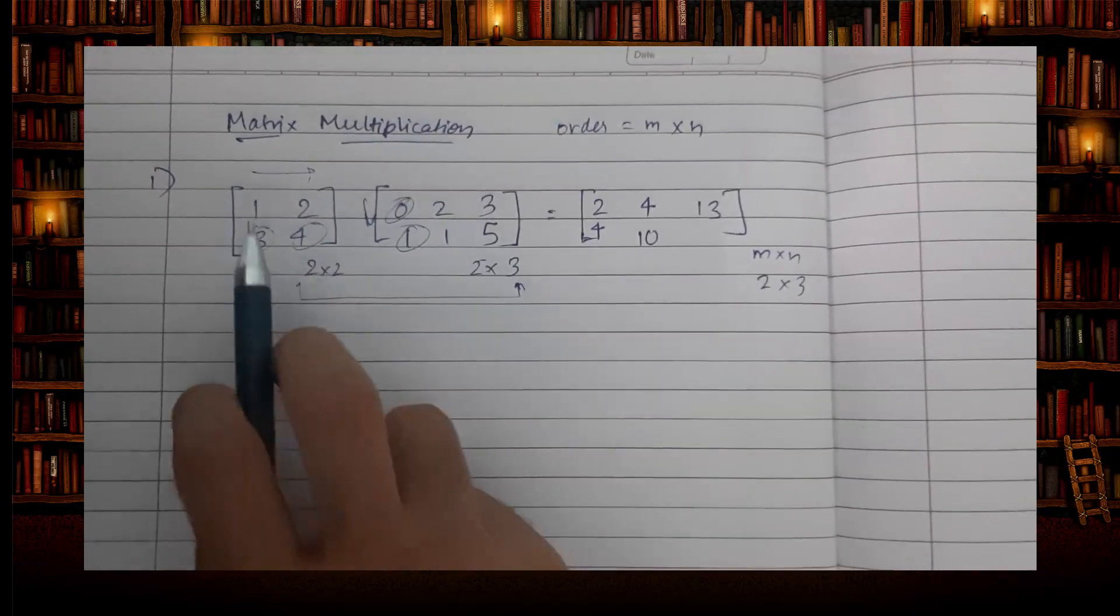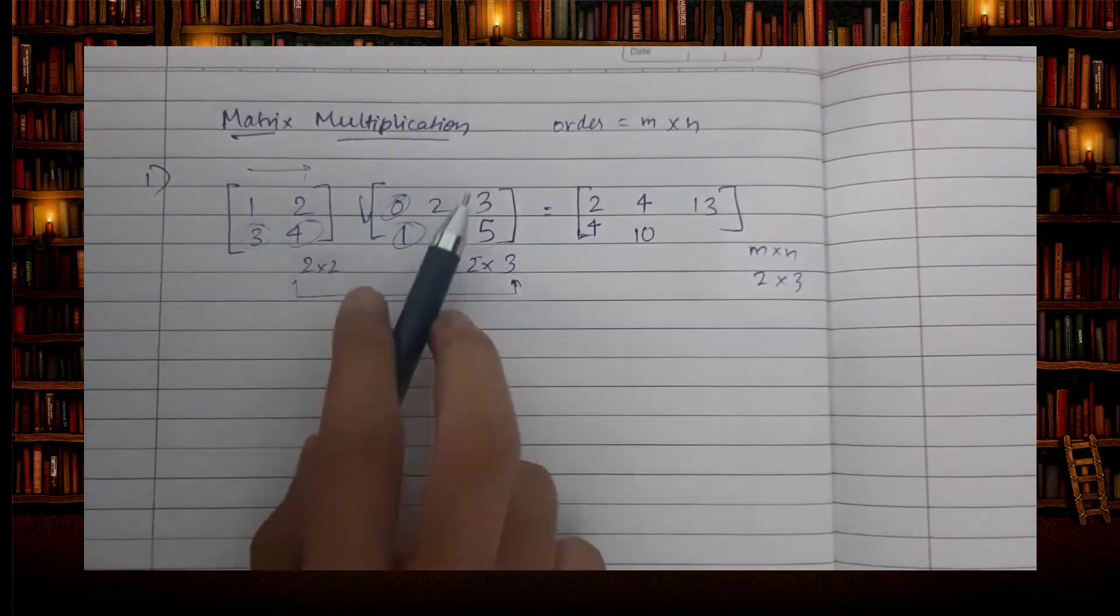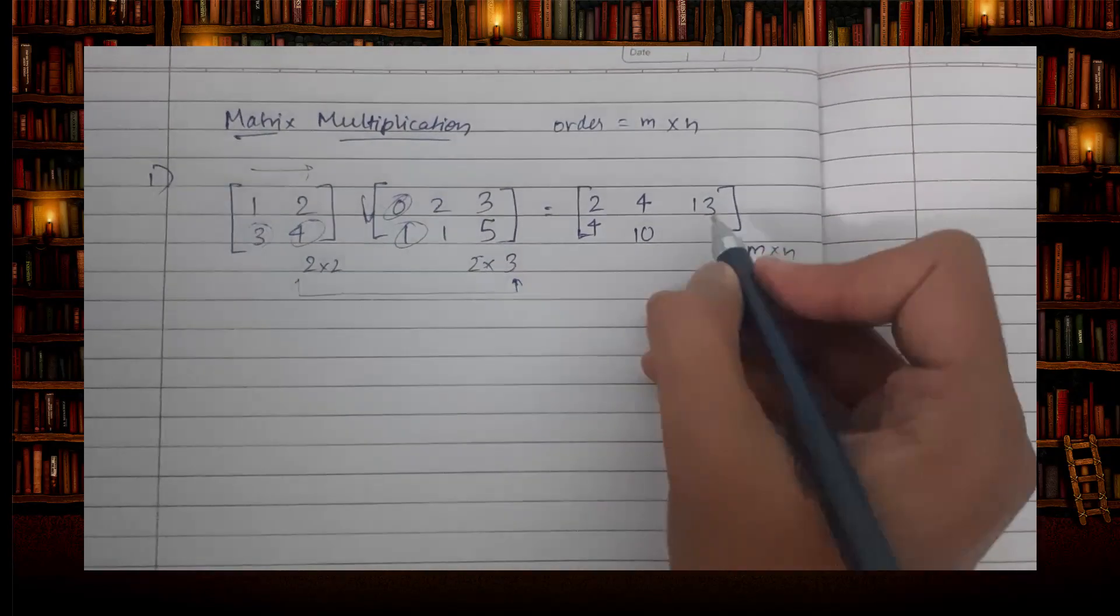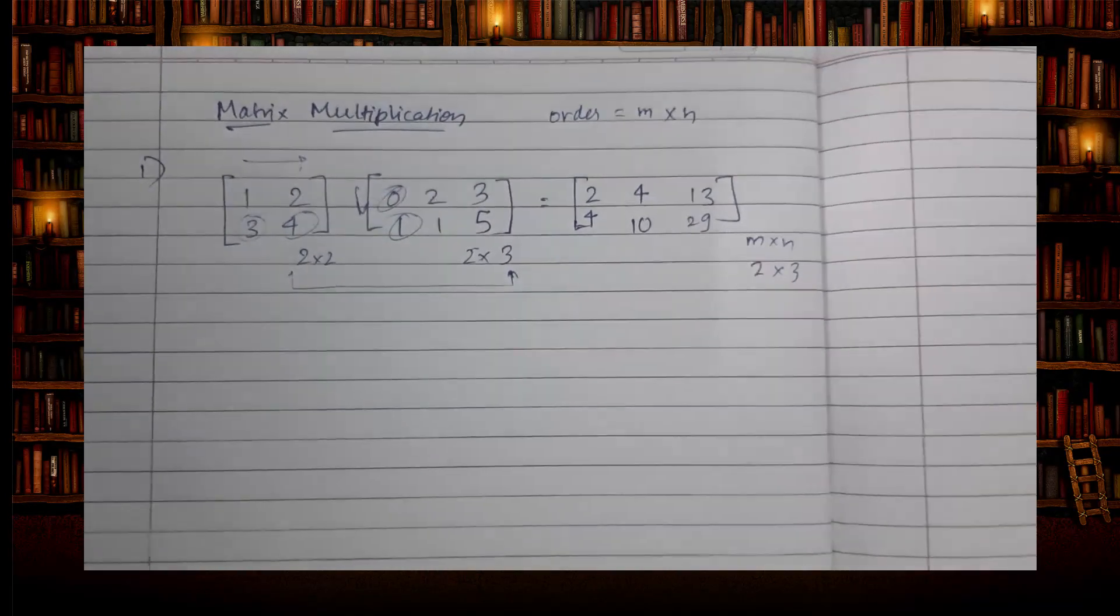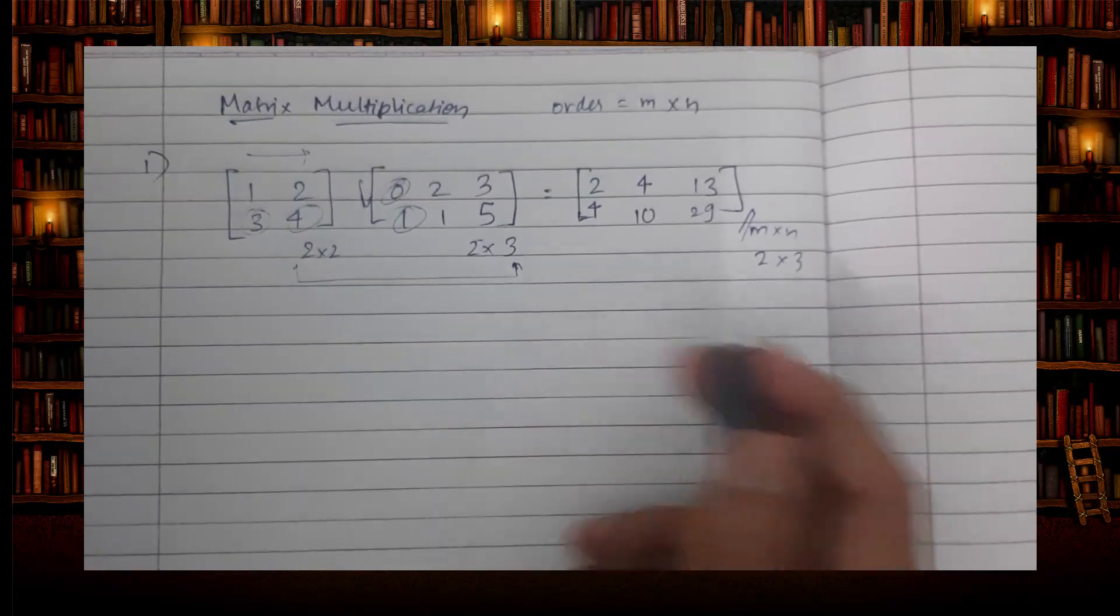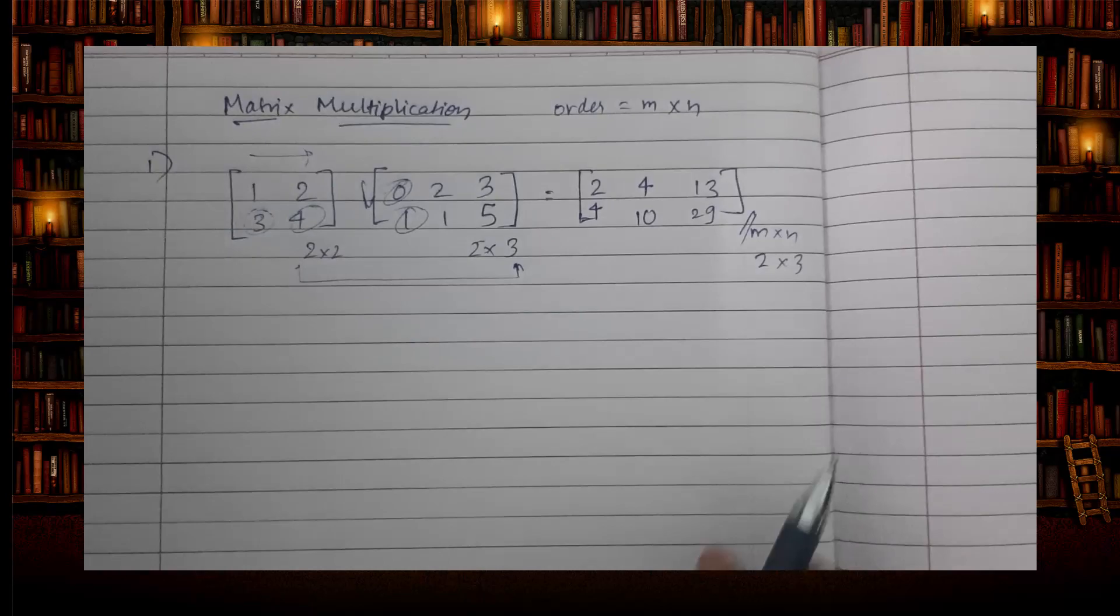So again, 3 into 3 is 9, plus 4 into 5 is 20, so 29. Simple, you got the answer. That's all, thank you.